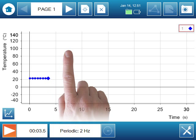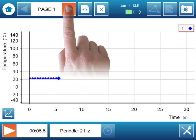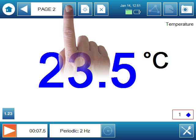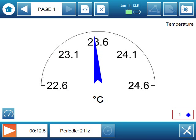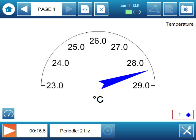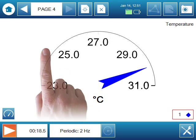Now, as that data collection continues, let's look at the other pages of the Spark Lab. They include a digit display, a table, and an analog meter display of the temperature. I'll grab the tip of the temperature probe in my hand so we can see some sort of temperature change and return to page one, our graph.